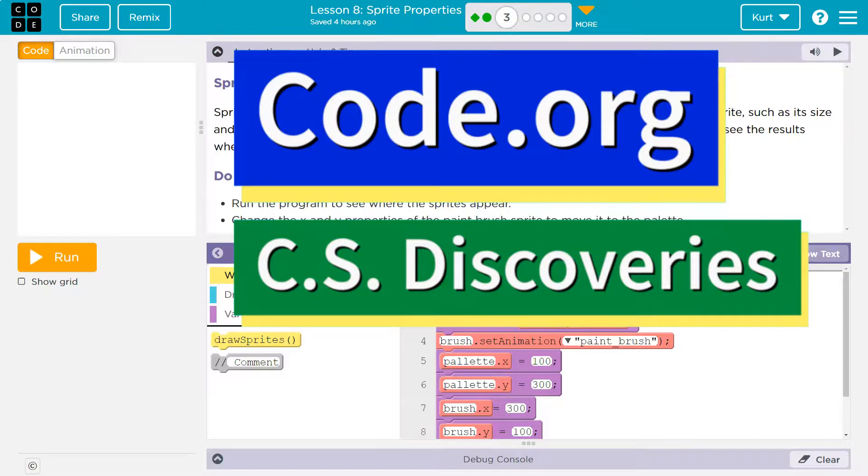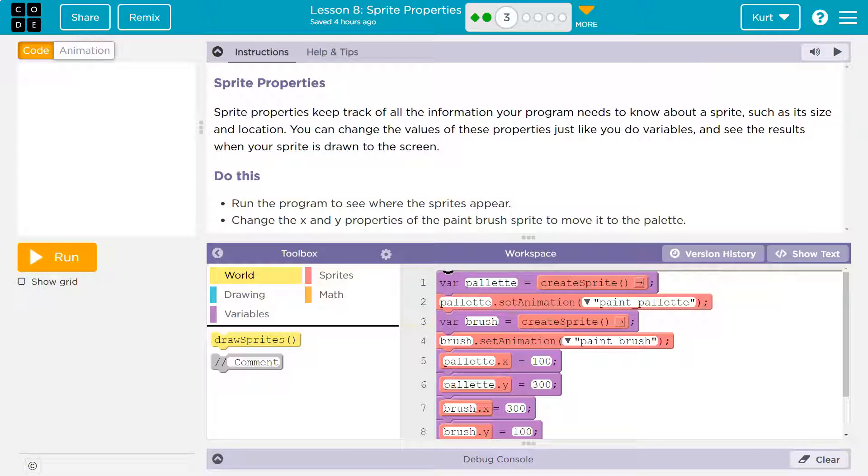This is code.org. Let's see what we're working on. Sprite properties. Sprite properties keep track of all the information your program needs to know about a sprite, such as its size and location. You can change the values of these properties just like you do variables, and see the results when your sprite is drawn to the screen.